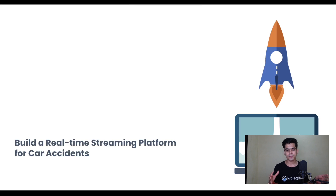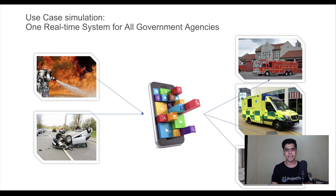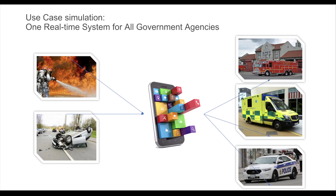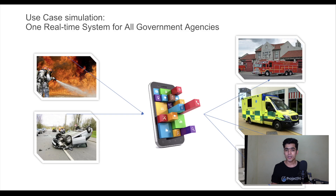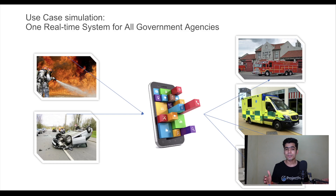Today's topic is building a real-time streaming platform for car accidents. Any project starts with a problem — you need to first identify the problem before looking at the data. In our case, we are building a real-time tracking system for a government agency. If an accident happens on the road or a fire occurs at a building, instead of just dialing an emergency contact, we want a system that gives us real-time updates so we can take action within seconds.